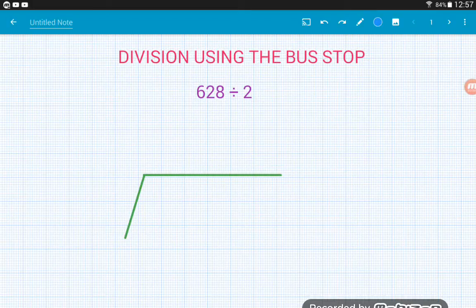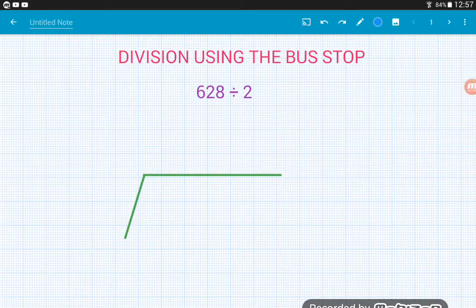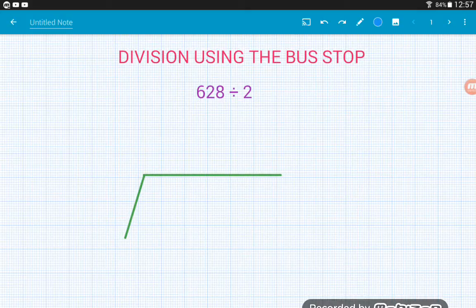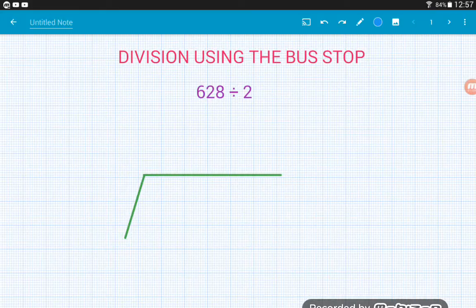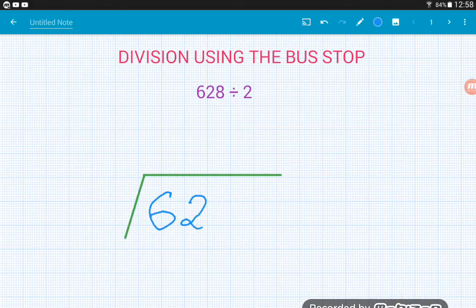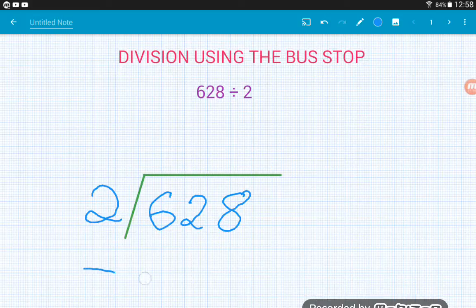This method is exactly the same as long division, it's just written down a little bit differently. So how do we set things up? Well, we draw ourselves one of these signs here, looks almost like a square root sign just without the tick at the bottom left. The number that we are dividing sits inside. If we imagine this is our bus stop, the number we are dividing gets put inside the bus stop, so 628 goes inside like that. Now the number that we are dividing by sits on the outside there.